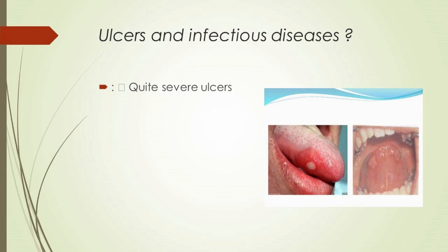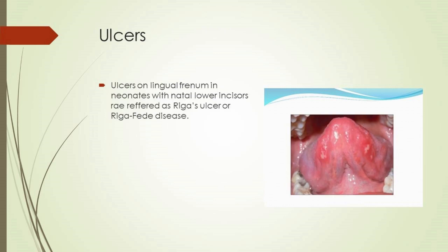Ulcers and infectious diseases: quite severe ulcers in the nature of lacerations and contusions are produced by sudden biting trauma, either during epileptic seizures or from a sudden blow to the jaw while the tongue lies between the upper and lower teeth. Ulcers of the lingual frenum in neonates with natal lower incisors are referred to as Riga-Fede disease. Shallow but persistent tongue ulcers, especially along the posterior ventral surfaces, are common in patients with lichen planus, nutritional deficiencies, and hematological problems.